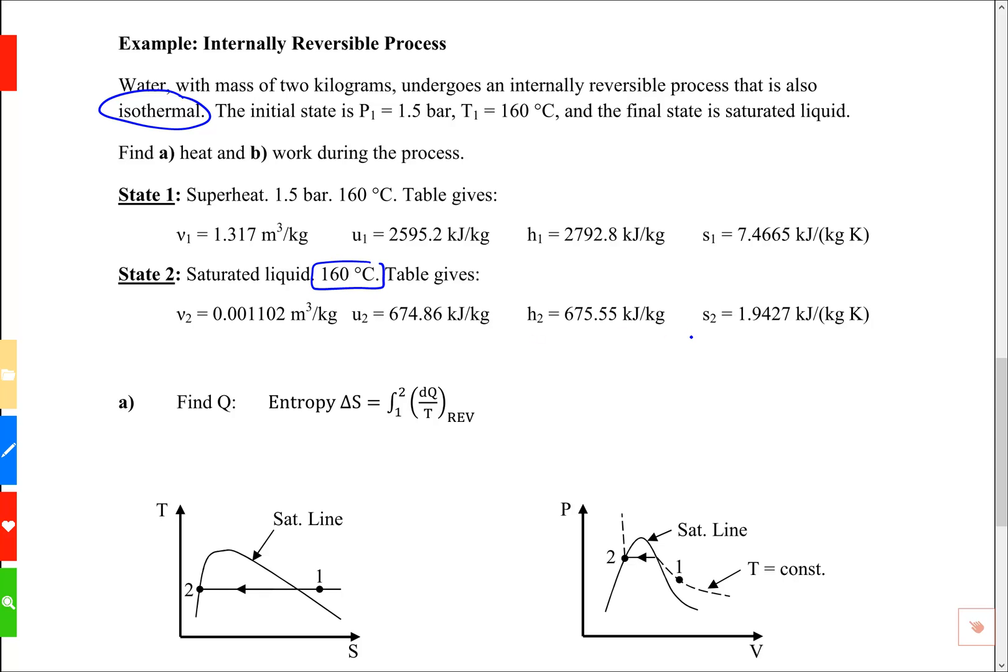Alright, part A we're asked to find the heat and I'm going to use the definition of entropy. The definition of entropy is ΔS equals integral from 1 to 2 of dQ over T reversible. I'm going to write this integral by pulling out the temperature.